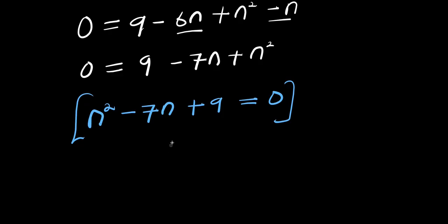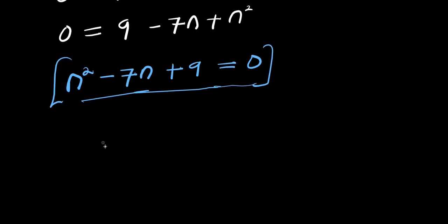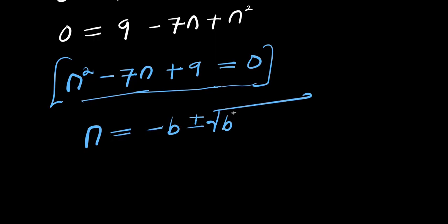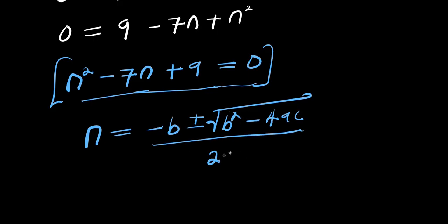We are going to solve this quadratic equation using the formula method. We have n equals negative b plus or minus square root of b squared minus 4ac, divided by 2a. Here, 1 is the coefficient of n squared so that is our a, negative 7 is the coefficient of n so that is our b, and 9 is the constant so that is our c.